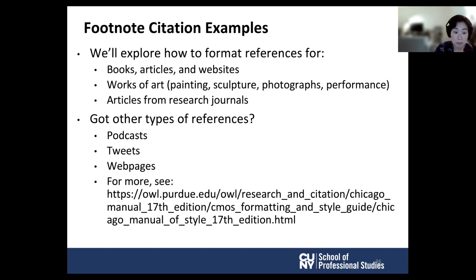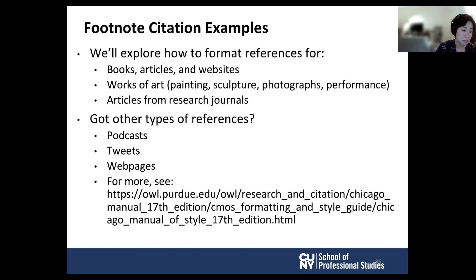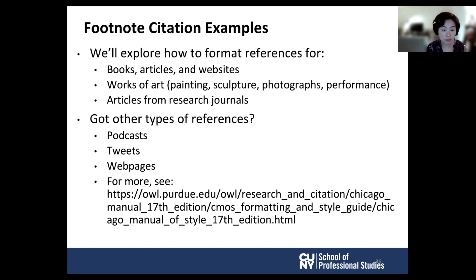Chicago's notes and bibliography style is recommended for those in the humanities and some social sciences. It requires using notes to cite sources and/or to provide relevant commentary. Each source that appears in the text must have a corresponding entry in the references list at the end of the paper — you need both a footnote and a bibliography entry. We'll go over how to format footnotes for common source types: books, works of art including paintings, sculptures, and photographs, articles from research journals, and articles from websites. For other source types such as films, videos, podcasts, or tweets, check Purdue OWL's Writing Lab website.